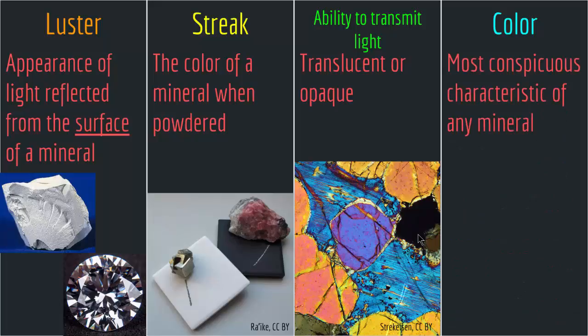Finally, the last optical property is color. Color is the most conspicuous characteristic of any mineral. However, I remember my teacher telling me not to depend on color in order to identify a rock, since depending on color is extremely misleading. So we have luster, streak, ability to transmit light, and color — all optical properties that can aid us in identifying a mineral.